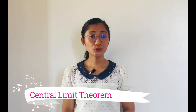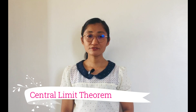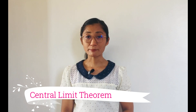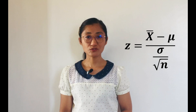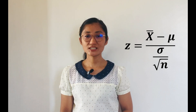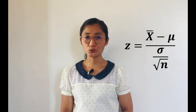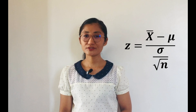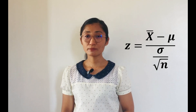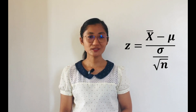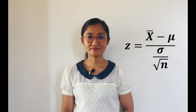This theorem applies inevitably to sampling from an infinite population. Furthermore, we use the z-conversion formula — z equals x-bar minus mu over sigma over the square root of n — in our computations, as mentioned in the previous lesson.